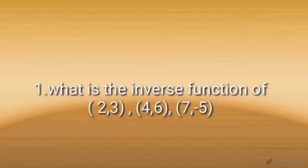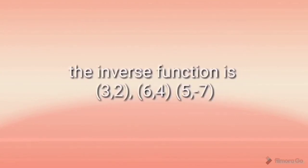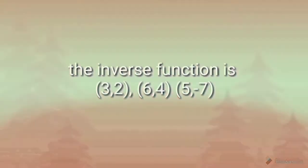What is the inverse function of the ordered pairs (2,3), (4,6), (7,-5)? The inverse function swaps each pair: (3,2), (6,4), (-7,5).